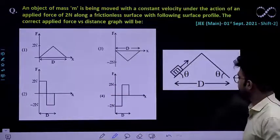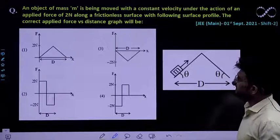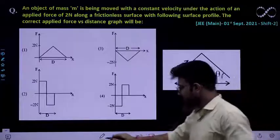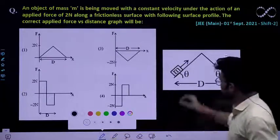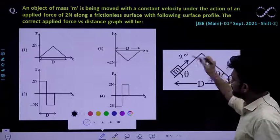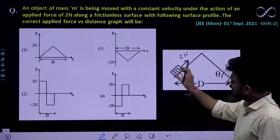So we already know that force and distance not displacement. So this much of setup has been given to you. This block of small m is pulled with a force of 2 Newton. So and it is moving with a constant speed.